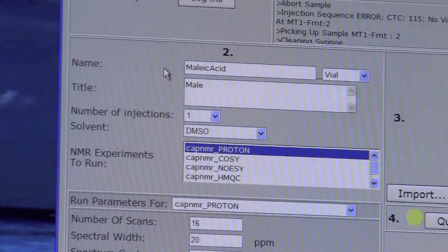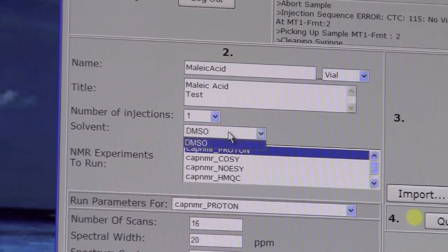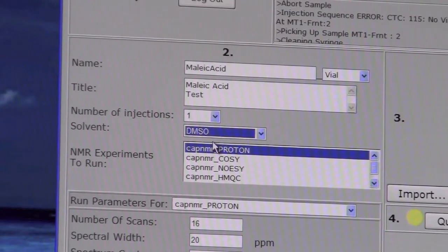You can use whatever you want in here, including multiple lines of text. And then here, choose the solvent. For now, we only have DMSO. We may consider adding more solvents down the road.